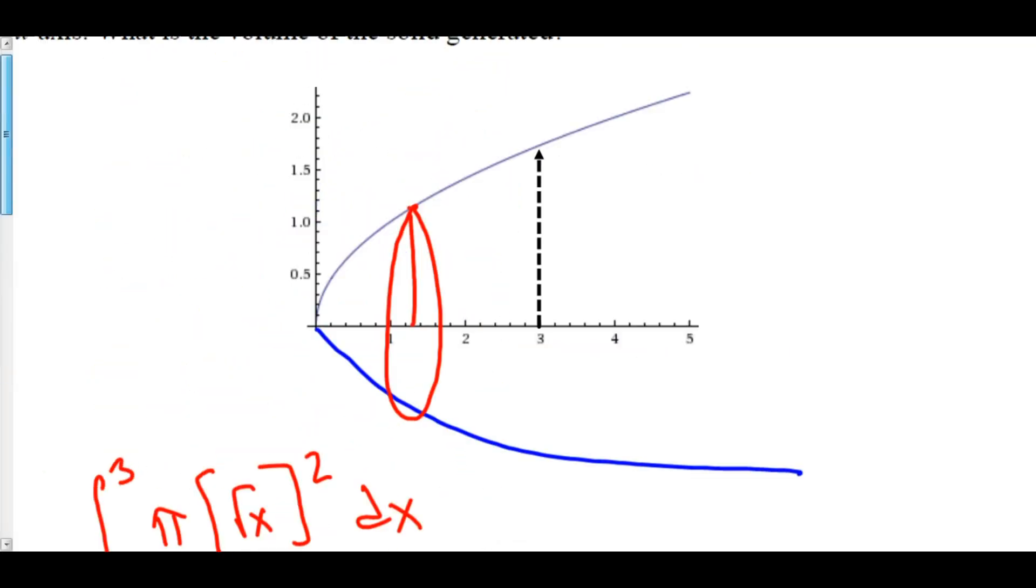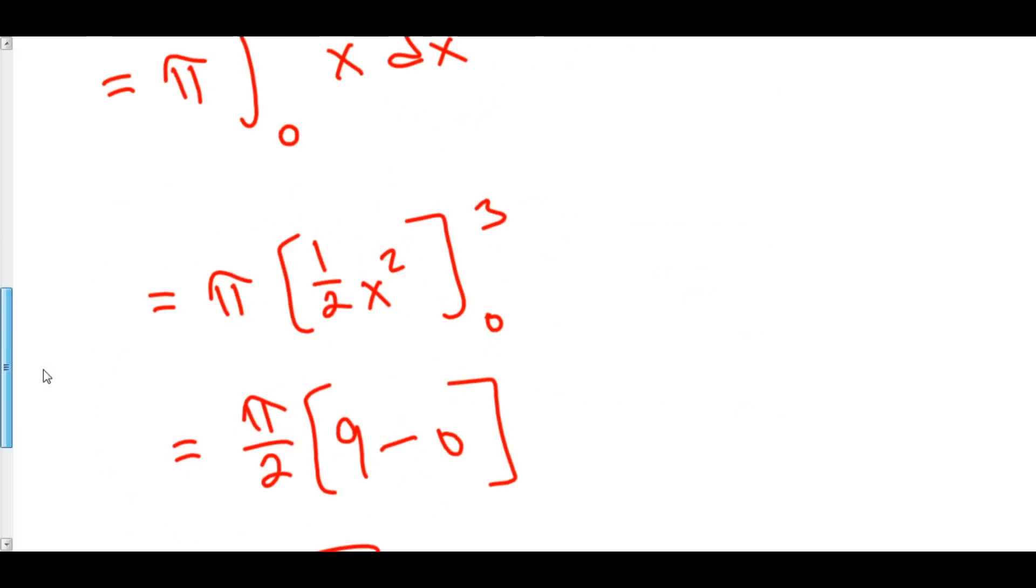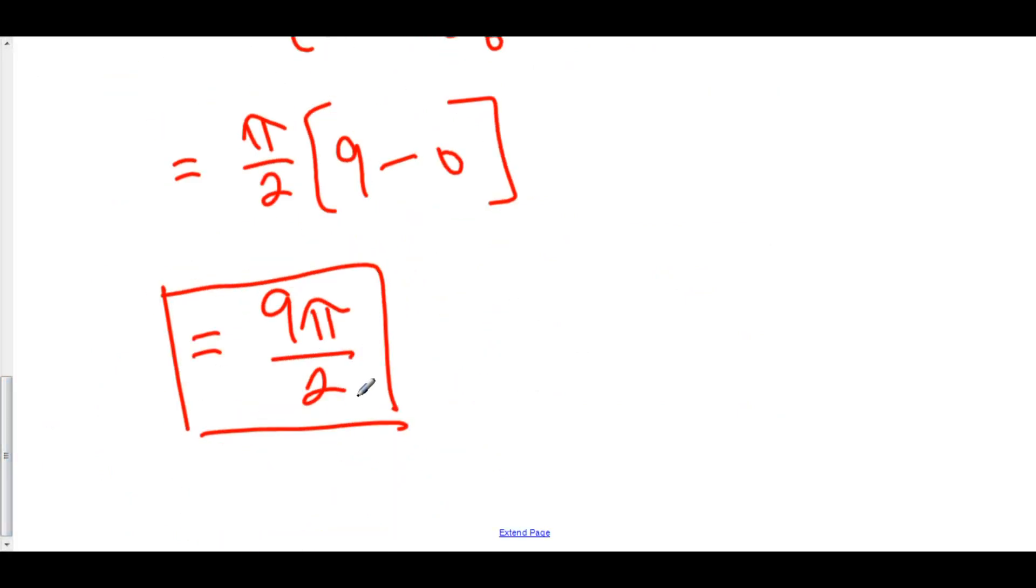Now, let's talk about what the solid might look like. If this is rotated about the x-axis, this could be the nose of an airplane or a very large bullet-looking thing. Essentially, it has this circular conic thing to it like the nose of an airplane. The volume again is 9 pi over 2.